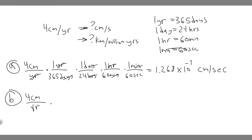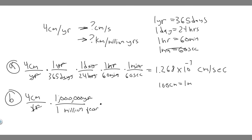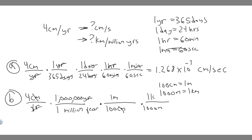Let's start with the years. There is one million years for every one million years, so we write that conversion to cancel out years, giving us centimeters per million years. Now we convert centimeters to kilometers: there are 100 centimeters per meter, and 1000 meters per kilometer. We put centimeters on the bottom to cancel, then 100 centimeters equals one meter, and 1000 meters equals one kilometer. Now on top we have kilometers per million years.